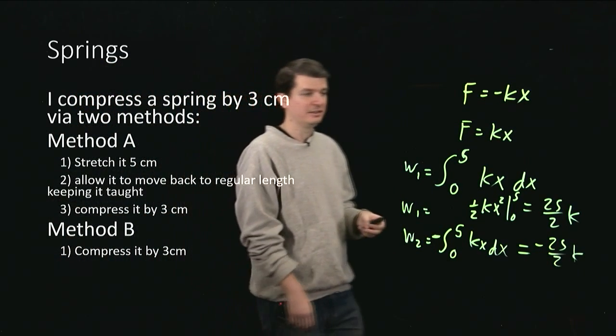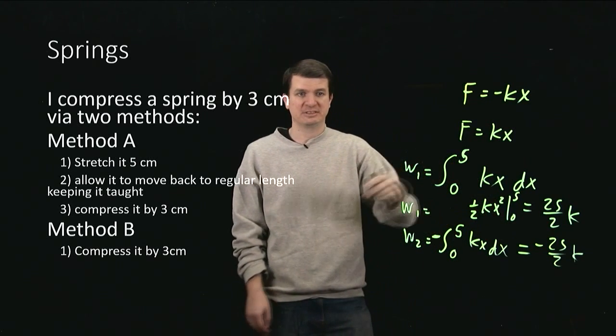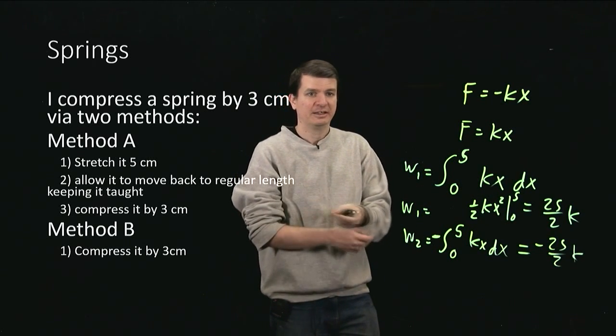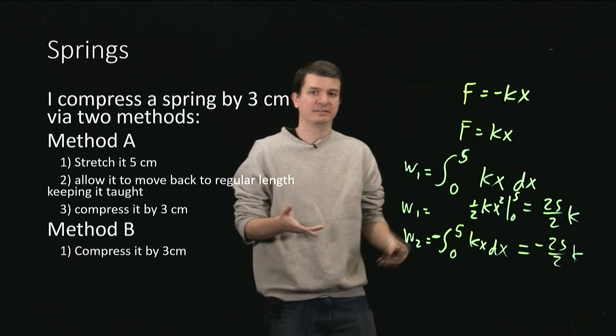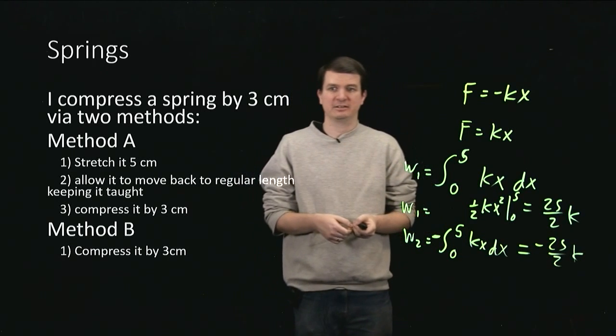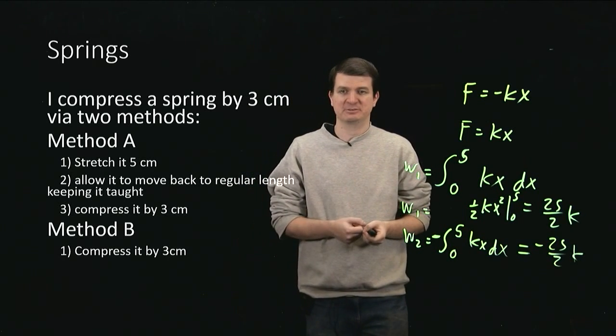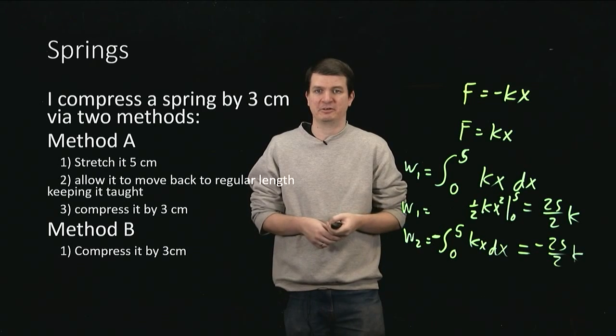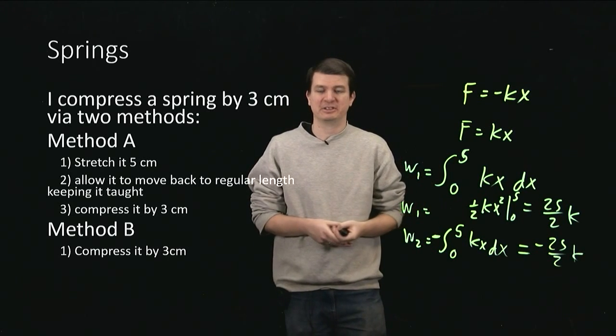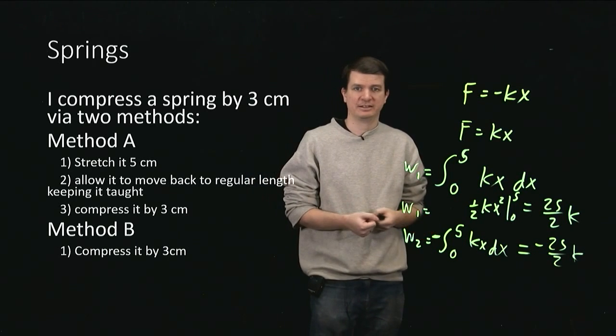You can see that I could have easily put 6 here and 6 there. It's always the same but negative integral. And that is telling me that indeed this path independence exists for the spring's restoring force. It doesn't matter how I've gone about doing it. Overall, the work that I've done is exactly the same.